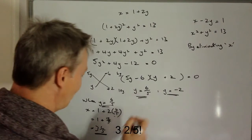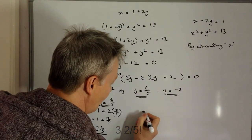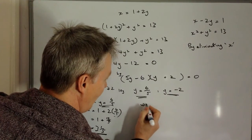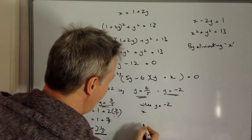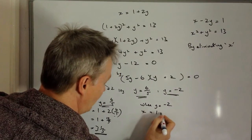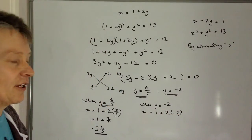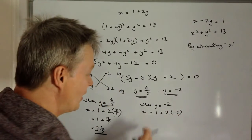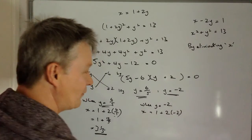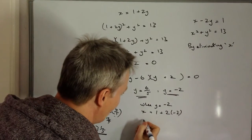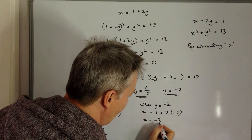And then the other one was a little bit easier because it's a whole number. So when Y equals minus 2, X equals 1 plus 2 times minus 2. Well, 2 times minus 2 is minus 4. So 1 plus minus 4 is 1 minus 4. So X equals minus 3.